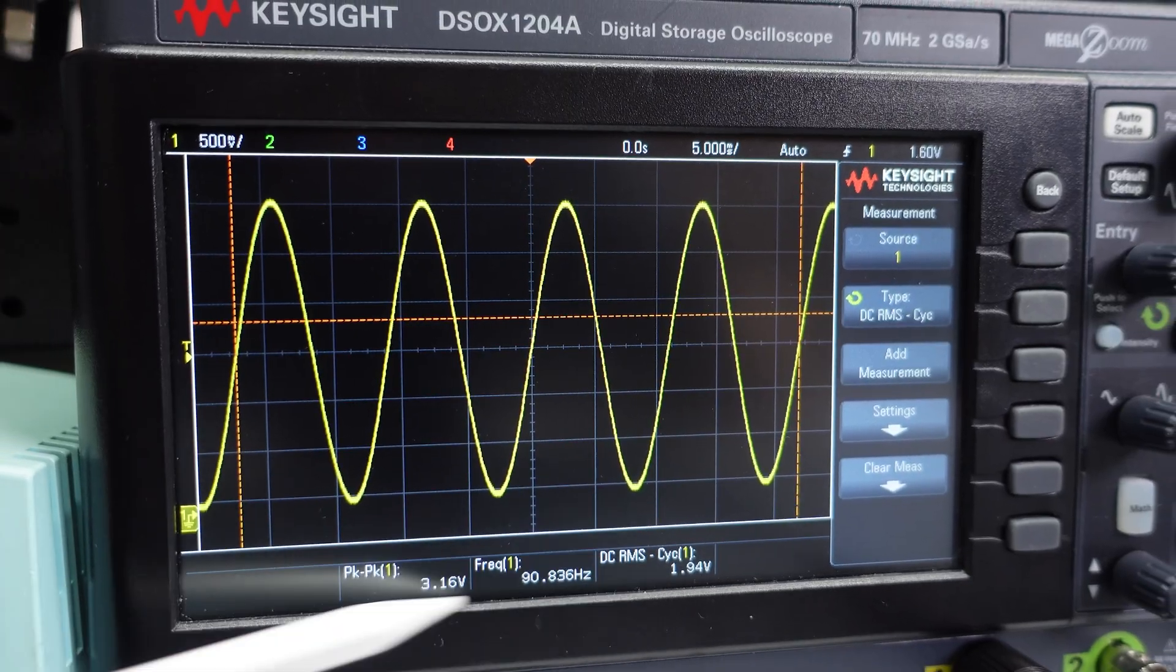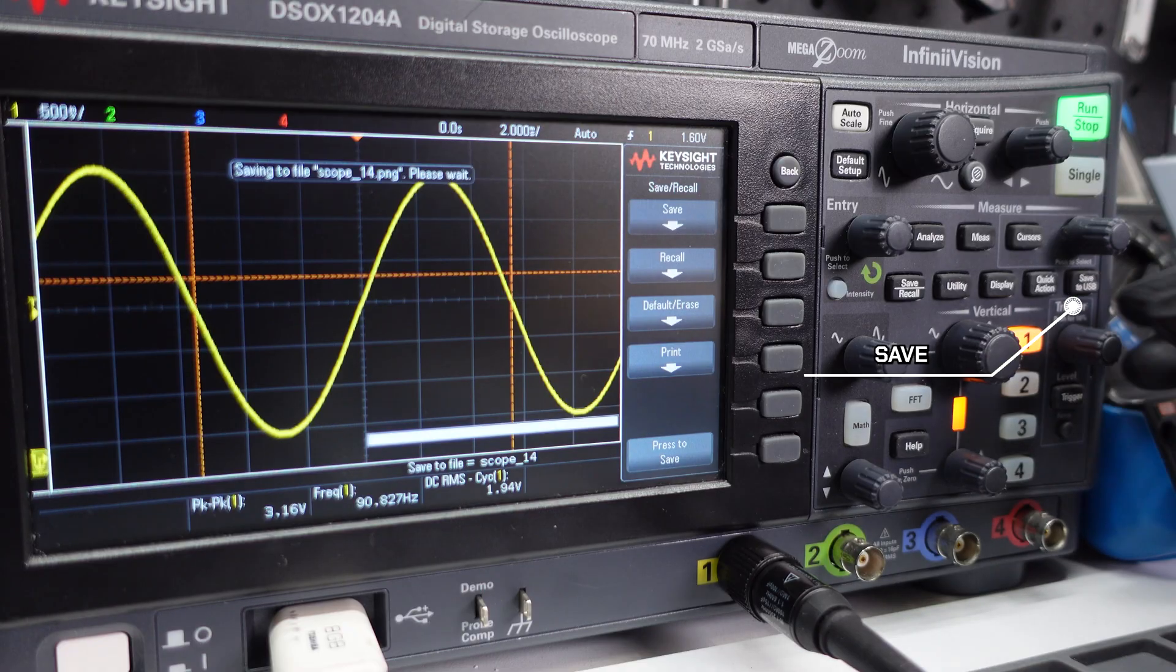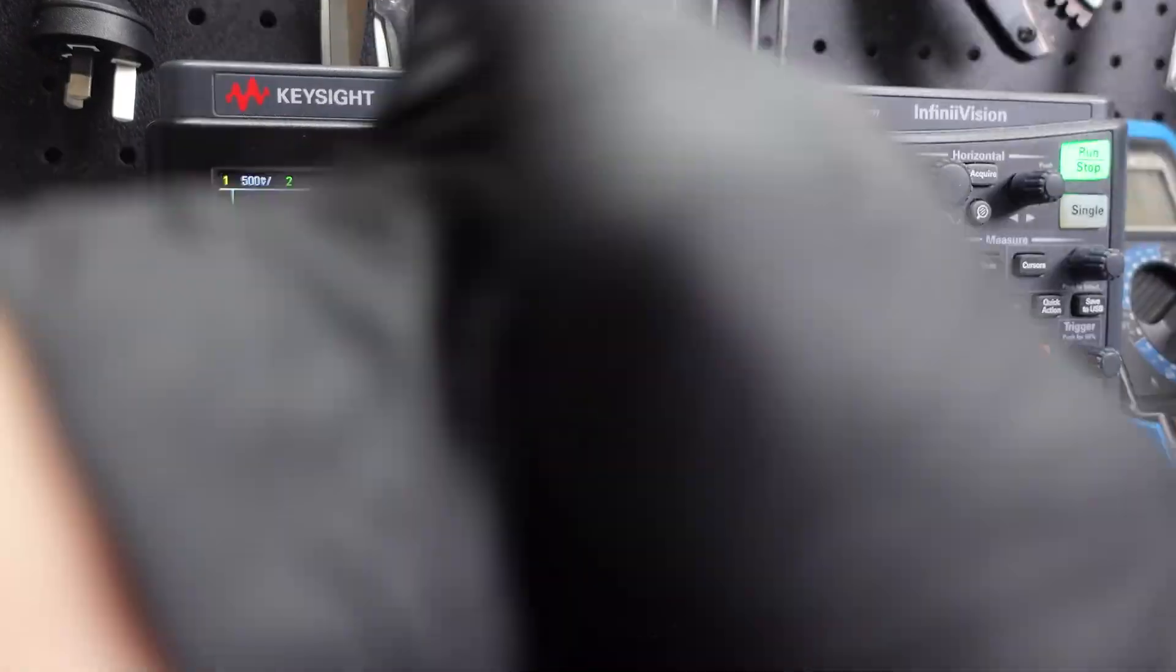Now let's do the same with frequency and RMS voltage. And if you want to save what you're seeing, you can check a USB in the scope, hit save, recall, and then hit save. And that's pretty much all the basics you need to know.